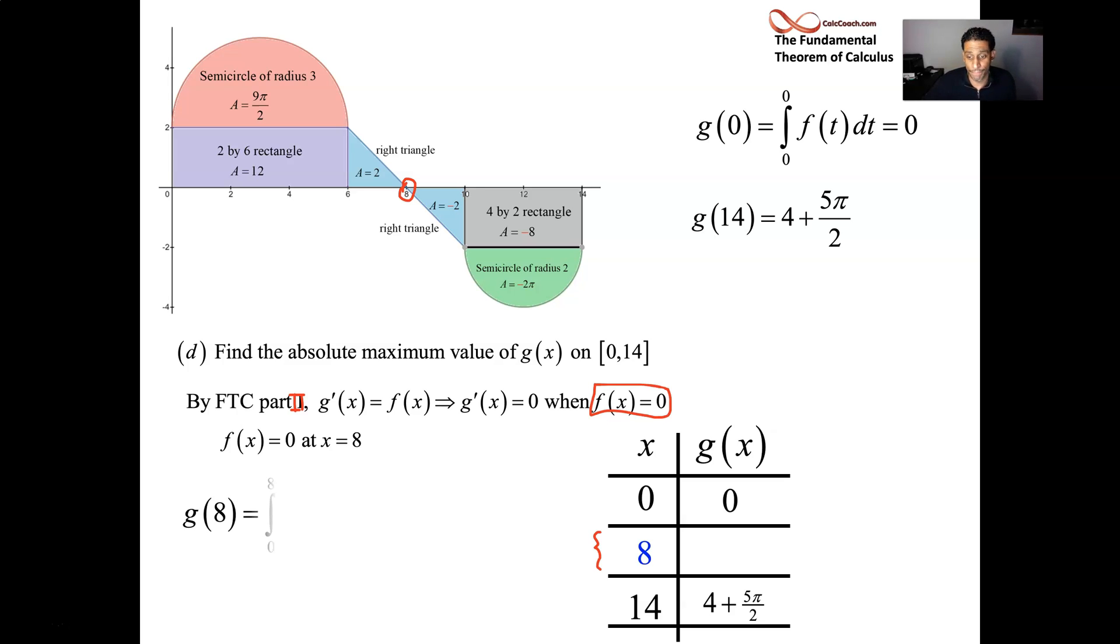So we need g of 8. Well, it's just those three areas there. The purple rectangle, 12. The red semicircle, 9 pi over 2. And the blue triangle. 14 plus 9 pi over 2. That's g of 8. It makes sense, though. You're accumulating positive area up to a certain point. x equals 8. And then you'll be accumulating negative area, taking away from the positive accumulation that you already had. So it's going to come down from there. And so, yeah, that's our maximum. Definitely at x equals 8. 14 plus 9 pi over 2 is much more than 4 plus 5 pi over 2.